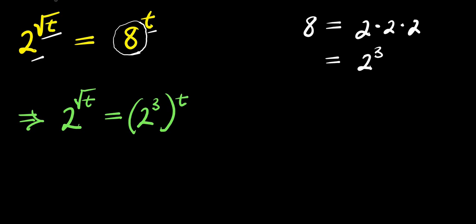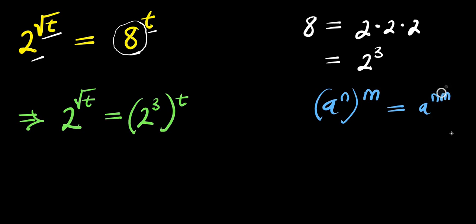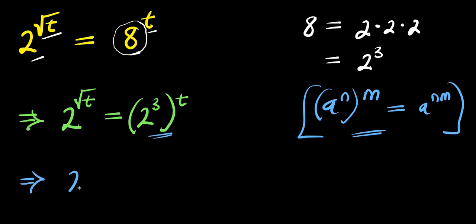Now consider this identity: if you have a power n raised to the power of m, this equals a to the power of n times m. We apply this identity here. That means we are simply going to have 2 to the power of root t equals 2 to the power of 3 times t, that is 3t.